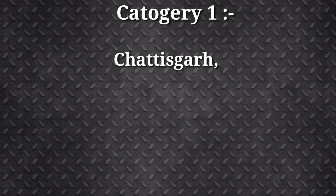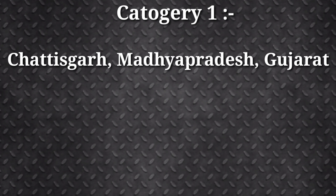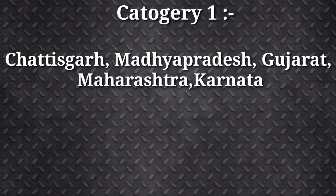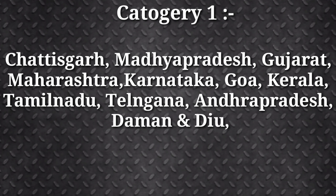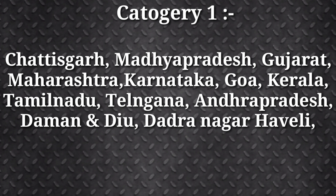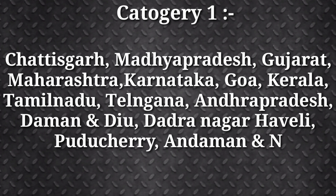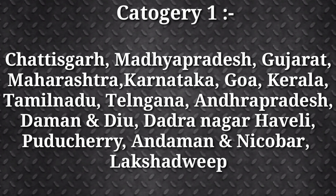Category 1 covers Chhattisgarh, Madhya Pradesh, Gujarat, Maharashtra, Karnataka, Goa, Kerala, Tamil Nadu, Telangana, Andhra Pradesh, Daman and Diu, Dadra and Nagar Haveli, Puducherry, Andaman and Nicobar Islands, and Lakshadweep.